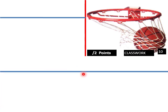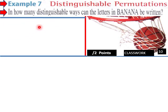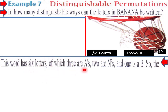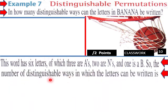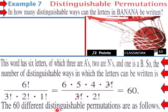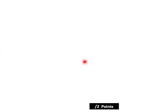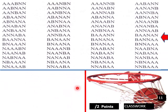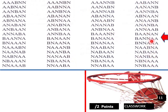Let's try an example. Distinguishable permutations: in how many distinguishable ways can the letters of 'banana' be written? The word has six letters, of which there are three A's, two N's, and one B. The number of distinguishable ways in which the letters can be written is 6 factorial over (3 factorial times 2 factorial times 1 factorial). When you calculate that out, it comes out to 60. There are 60 distinguishable permutations, which are shown in a chart — 15 in each column times four columns equals 60.